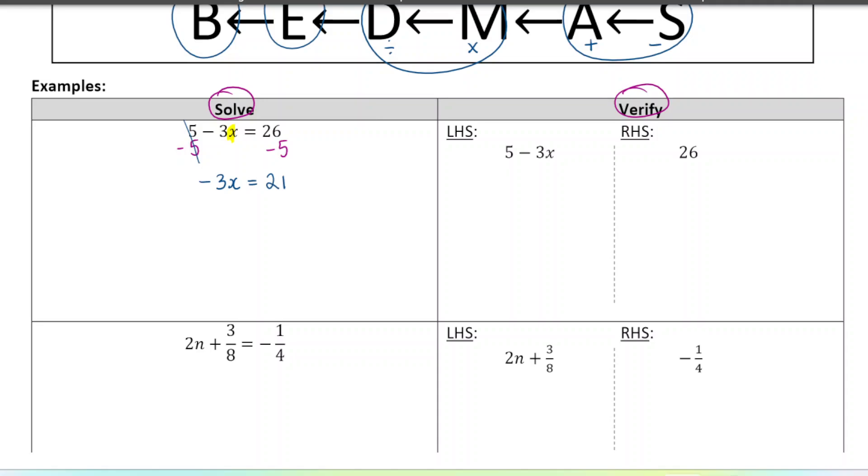Now I want to keep going with my opposite operations and get rid of that negative 3. So the negative 3 is being multiplied with the x, so we're going to do the opposite of that, which is dividing. So we're going to divide both sides by negative 3. Negative 3 divided by negative 3 is 1, so we'll have 1x, which you can just write as x. And then 21 divided by negative 3 is negative 7. And there we go, there's our final solution. x equals negative 7. We've isolated x on the left-hand side there.